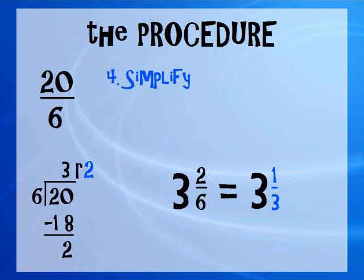And of course, if we're in the upper grades, we are going to simplify it. 3 and 2/6 becomes 3 and 1/3. And that's all there is to it.